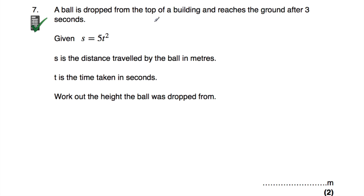Question number 7: a ball is dropped from the top of a building and reaches the ground after 3 seconds. s is the distance travelled by the ball in metres, and t is the time taken in seconds. We've been asked to work out the height the ball was dropped from. The height will be the distance it travels in the 3 seconds, because when it's released from the top of the building it takes 3 seconds to reach the ground — so the distance travelled equals the height of the building.